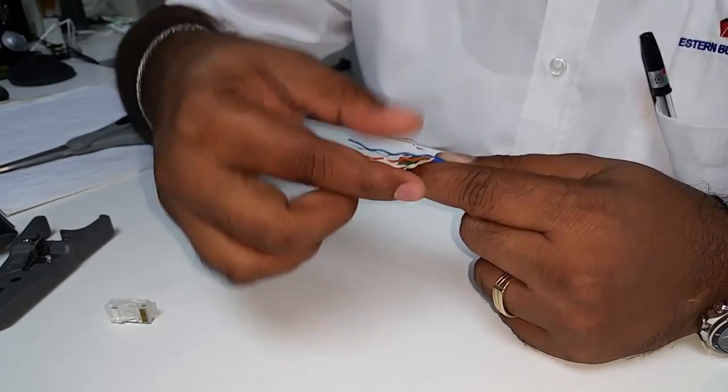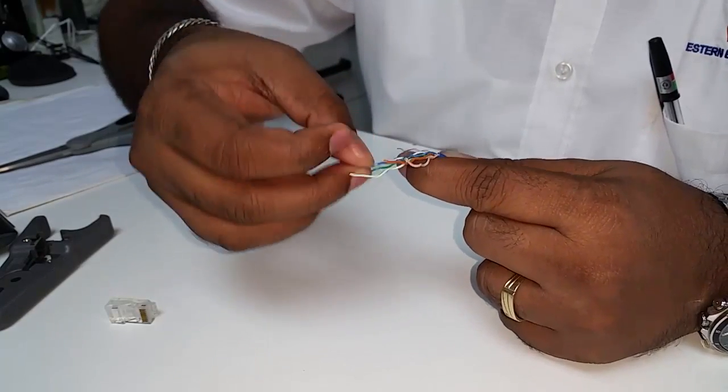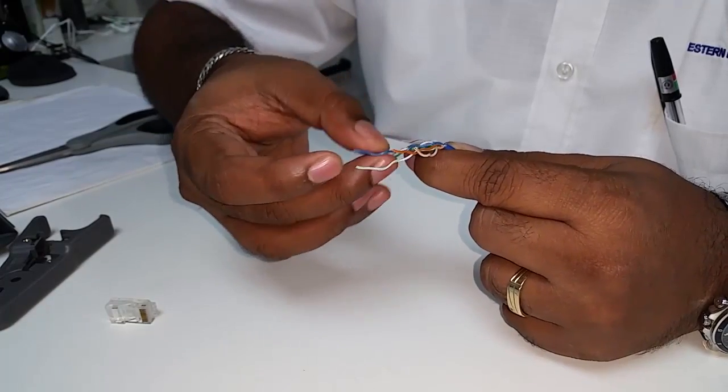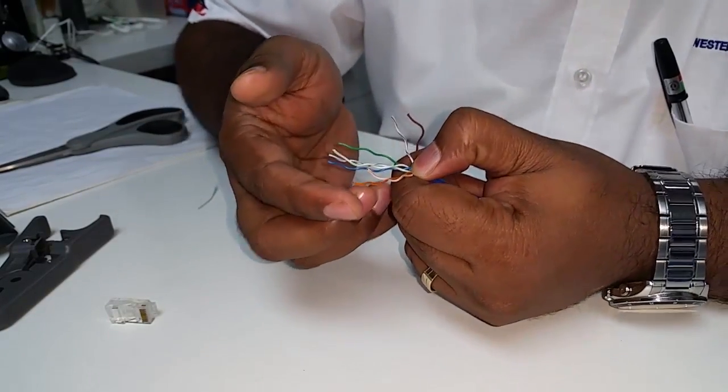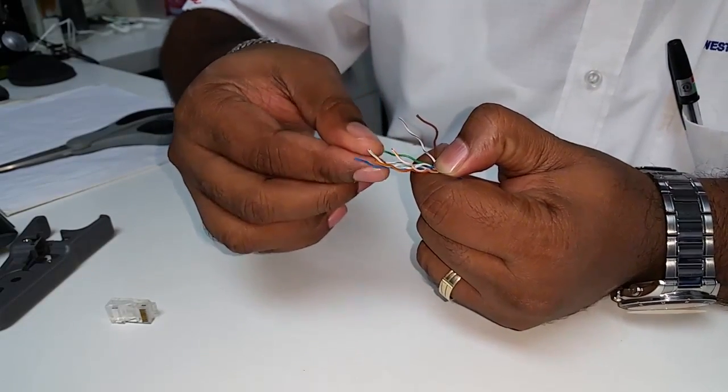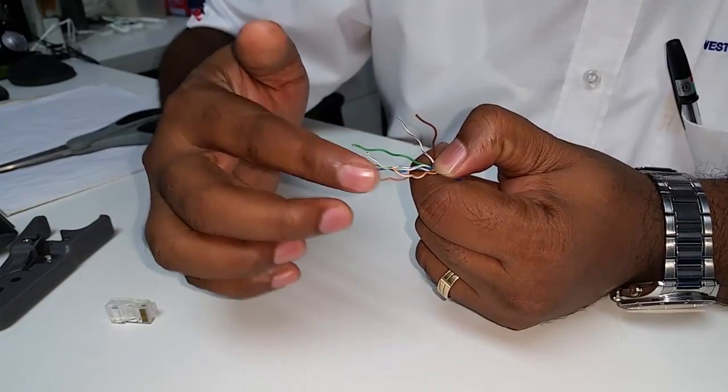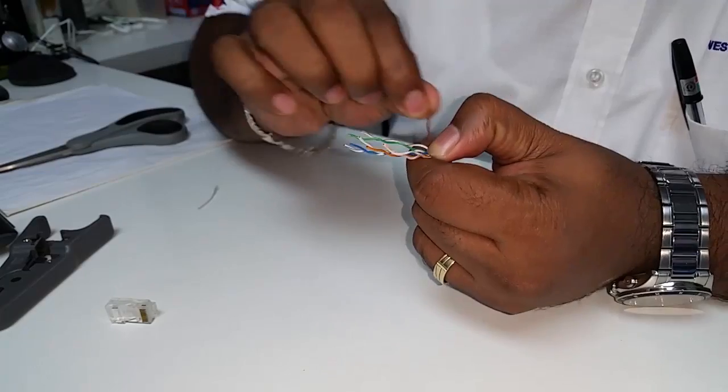Okay, now all these are white orange and this is white brown, this is white green. But for blue we reverse the pair so it's blue white. Now we hold at the base like this with our finger, we press down and we make sure it's white orange, white green, blue, white blue, green, white brown, and brown.